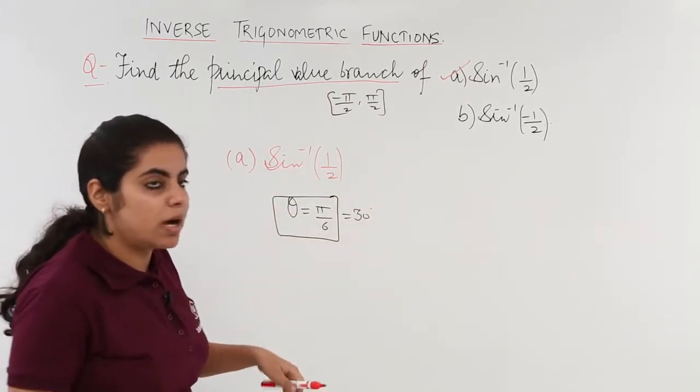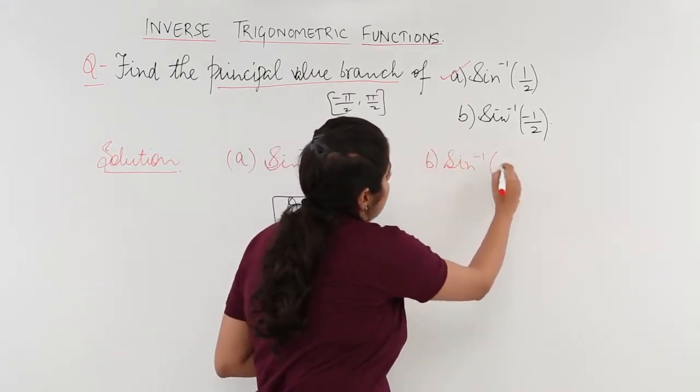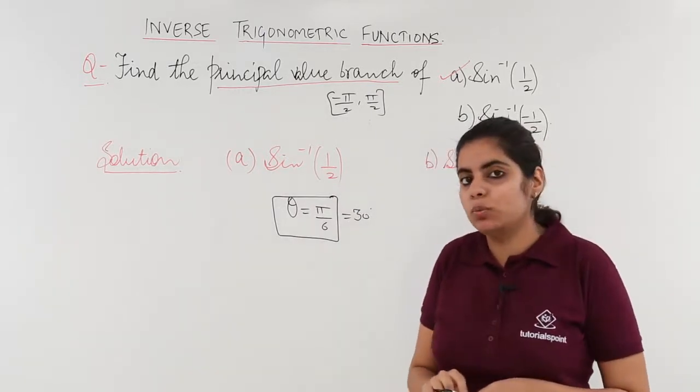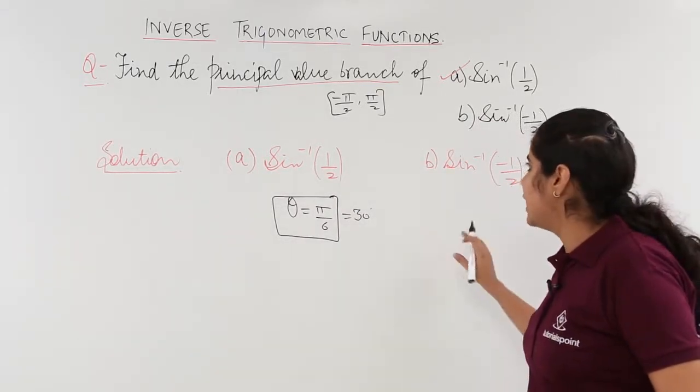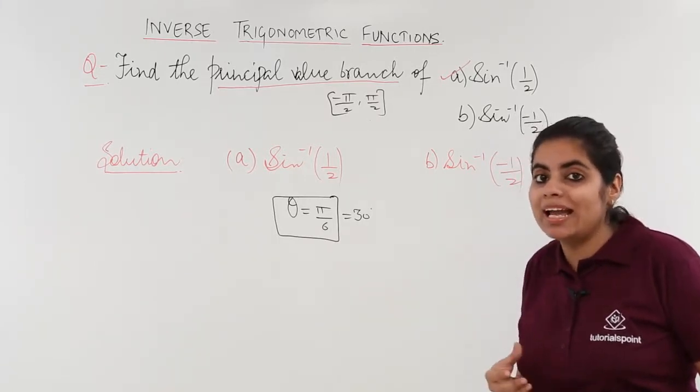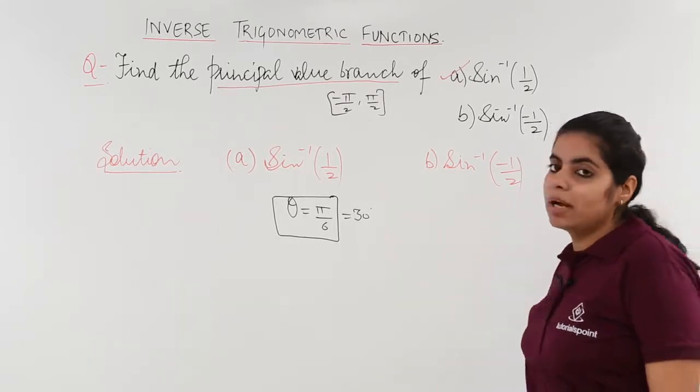What about the second part? The second part is sine inverse minus 1 by 2. Now, sine inverse minus 1 by 2 means what? It means that my value or my answer should be something that angle whose sine is minus 1 by 2.